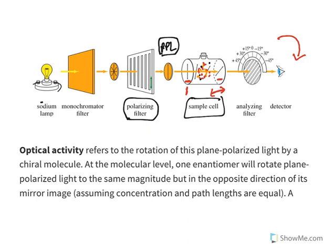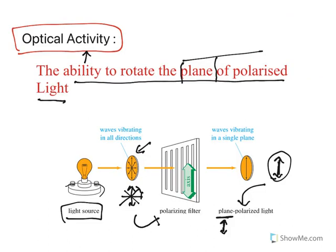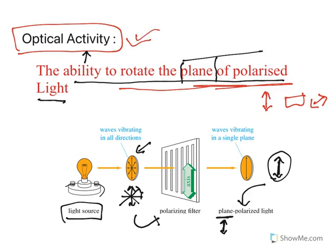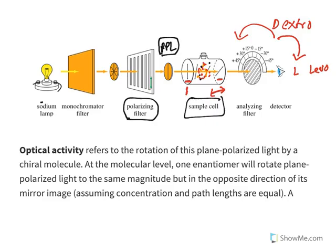If the plane is rotated to the left side they are known as levorotatory isomers. If the plane is rotated to the right side they are known as dextrorotatory isomers. Optical activity is a property which says that a molecule can rotate the plane of polarized light. Initially the plane is in one orientation, and when it passes through the sample the plane is rotated. This ability is known as optical activity, and molecules which show this optical activity will have optical isomerism. Optical activity refers to the rotation of plane-polarized light by a chiral molecule.